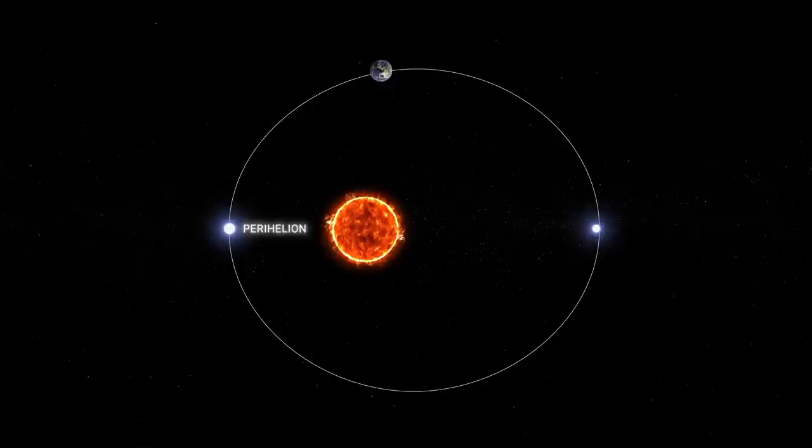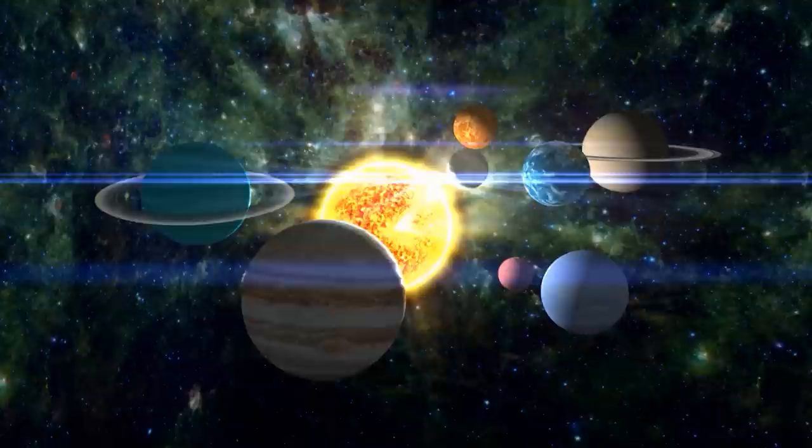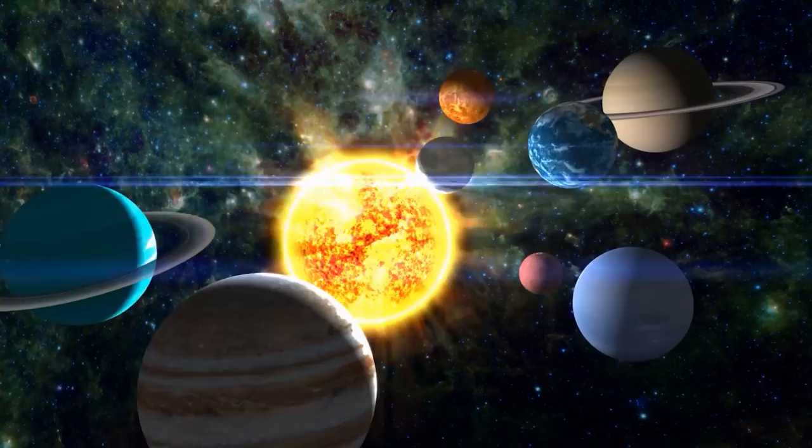When Earth is closest to the Sun, it is said to be at perihelion, and the farthest point in its orbit in relation to the Sun is known as aphelion. These two points occur at regular intervals. Earth reaches perihelion around January 3rd, and aphelion around July 4th, which is evident with the seasonal changes of the weather.